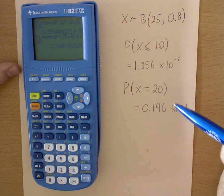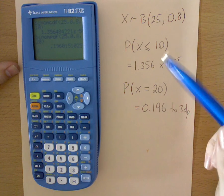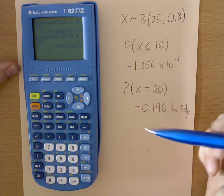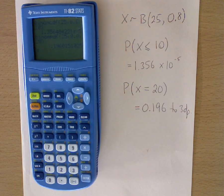So this is an example of using the binomial distribution function on the TI-82 stats graphical calculator. Good question. Thanks for listening.